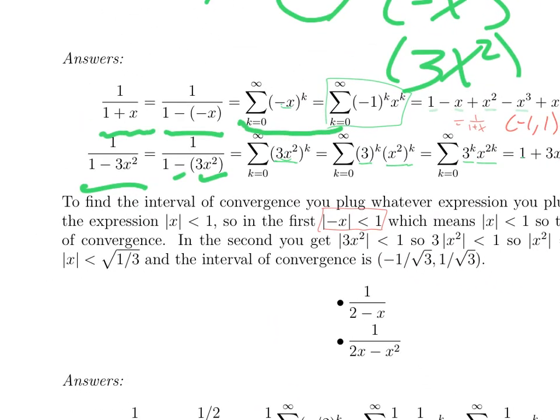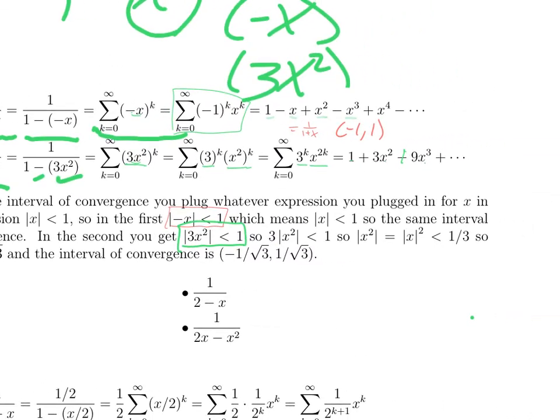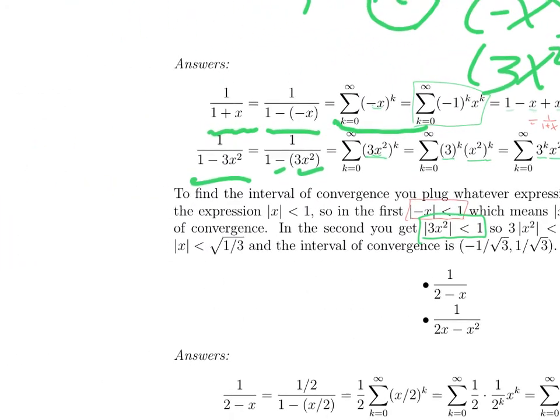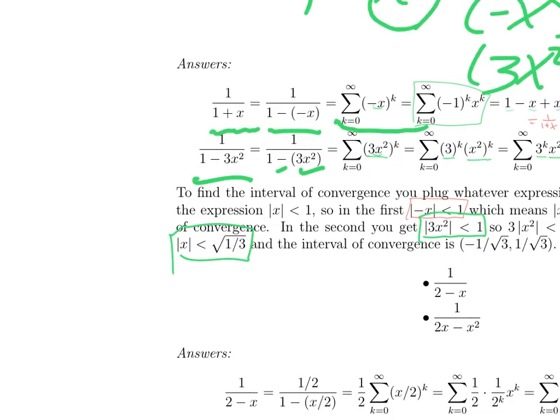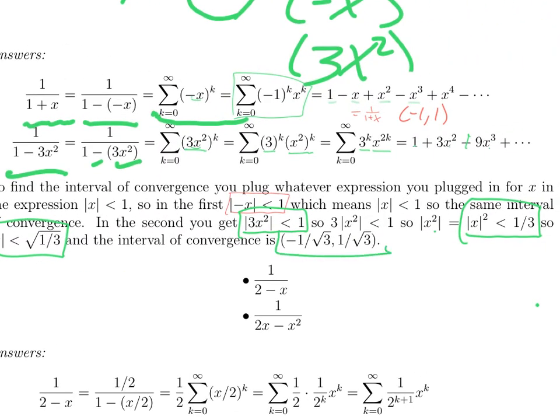And then to find the interval of convergence, remember we wanted the thing being raised to the k here has to be absolute value less than 1. So that's what you always start with. Absolute value of 3x squared is less than 1. You can pull the 3 outside of the absolute value and bring it to the other side of the inequality. Absolute value of x squared and absolute value of x squared are the same thing. So you take the square root of both sides, and we get the absolute value of x is less than 1 over the square root of 3.